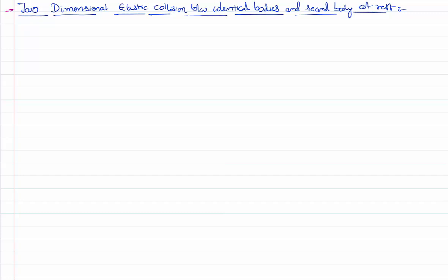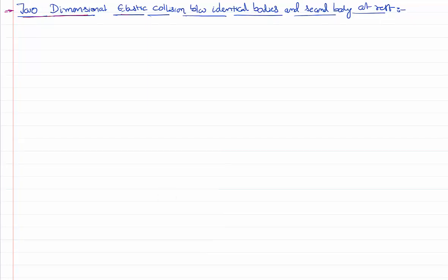Hello everyone, welcome to this video lesson. In this video lesson we are going to talk about a two-dimensional elastic collision. Two-dimensional means after the collision the bodies are not restricted to only one dimension — they are moving in a plane. A collision is elastic means both momentum and kinetic energy are conserved. I am taking a special case where the two bodies are identical in nature, masses are equal, and the second body is initially at rest. I am going to prove that after the collision these two bodies move perpendicular to each other.